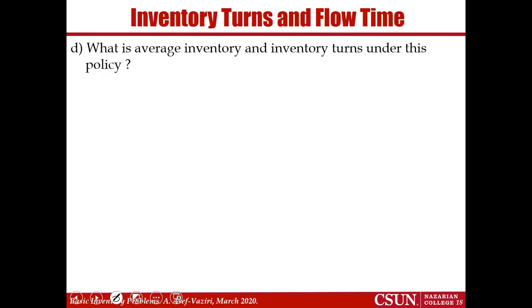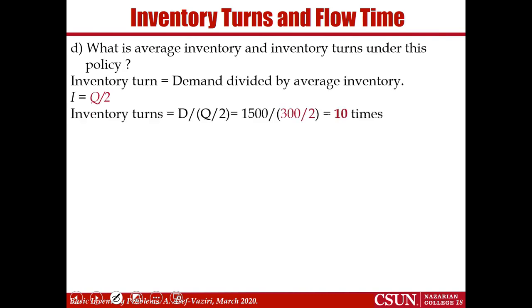What is the average inventory and inventory turn? Average inventory: we ordered for 10 weeks, we ordered 300, inventory goes from 300 to 0, so the answer is 150. Inventory turn is equal to demand divided by average inventory. Demand is 1,500, average inventory is 150. Dividing them gives us 10.